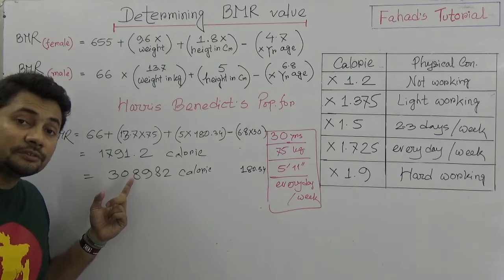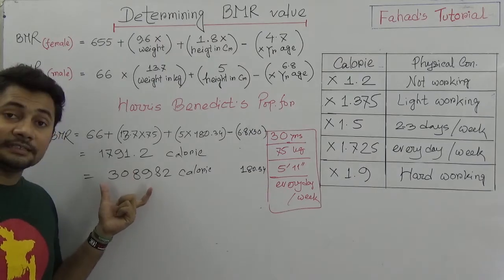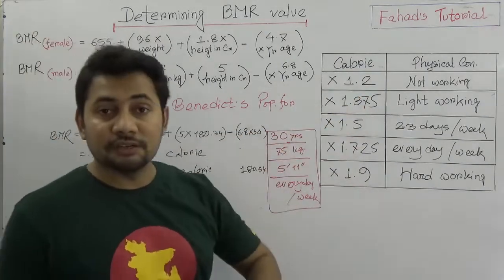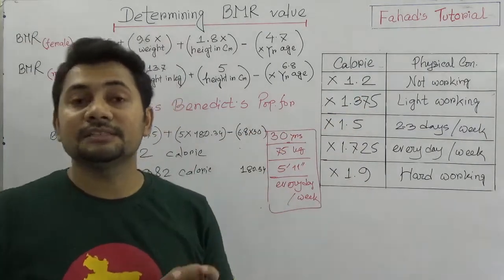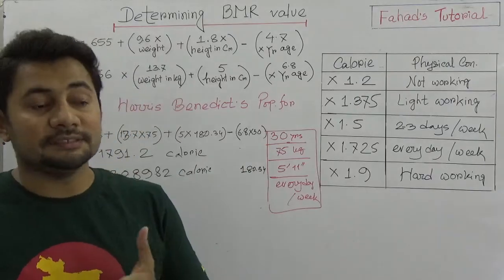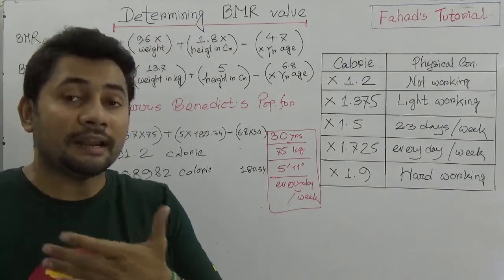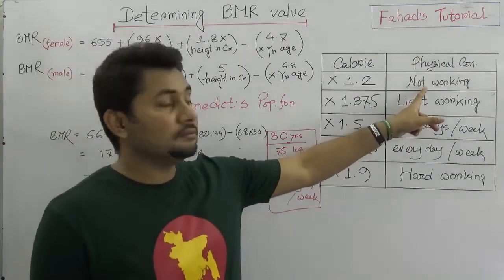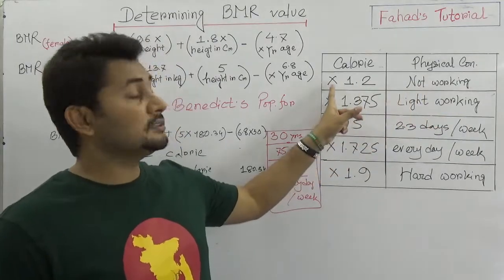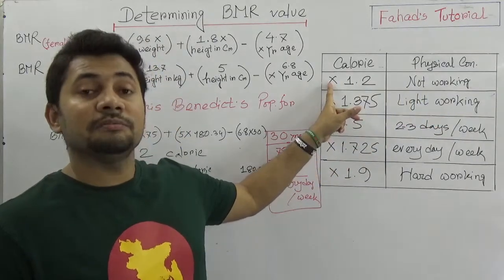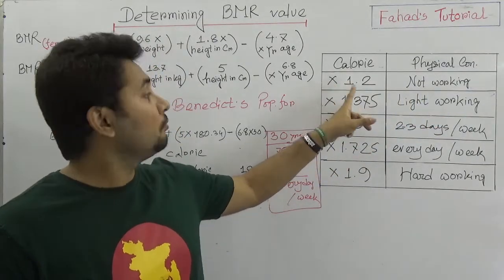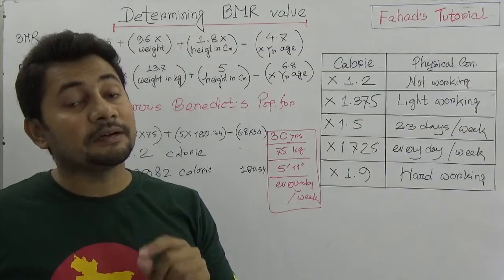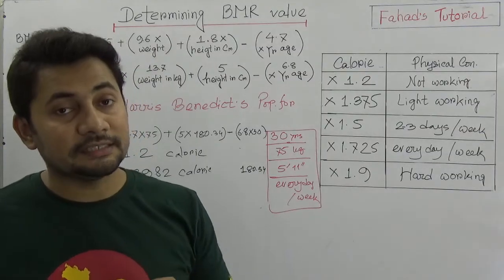Why do we need to multiply? You see there is a chart. If somebody's lifestyle is very lethargic and doing nothing, then that person's BMR should be multiplied by 1.2 to get the daily calorie intake. But if the person is light working, then multiply by 1.375.